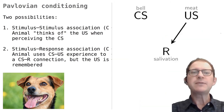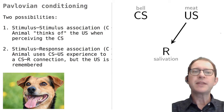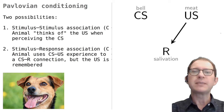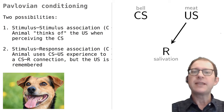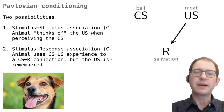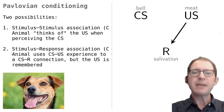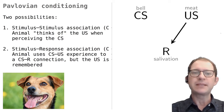For simplicity, let's consider a case where the unconditioned and conditioned responses are the same, like in Pavlov's original experiment. In this case we are considering three things: the CS, the US, and the response R, be it the CR or the UR. It is helpful to think of the classic example of bell, meat, and salivation as in Pavlov's experiment.